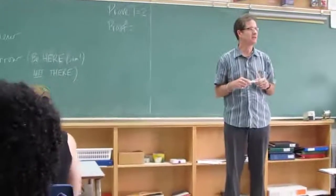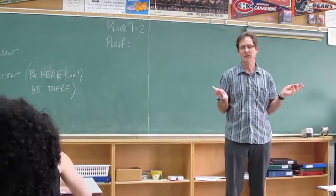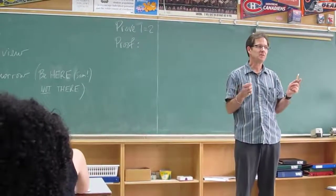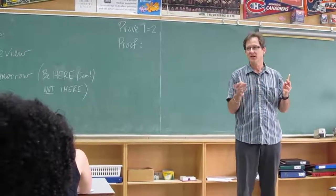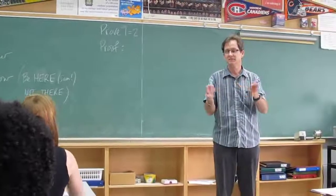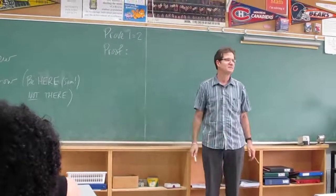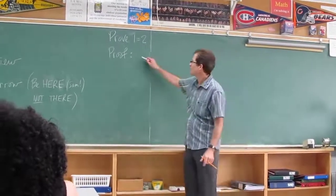A while ago I proved to you that 0 was equal to 1, and I did that by using an infinite series. I could have proven that 0 was equal to any number. I just chose 1. And once you prove 0 is equal to any number, you can add or subtract any number from both sides. You can prove any number is equal to any number. But today I'm going to prove by a different method that 1 equals 2. Believe it or not.